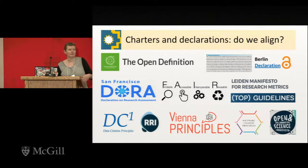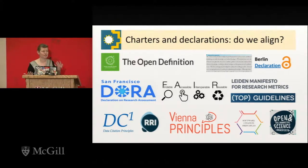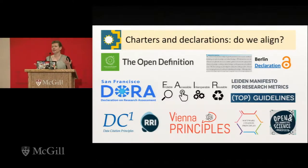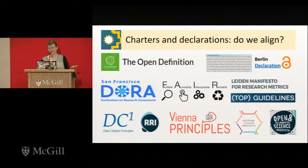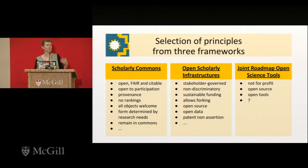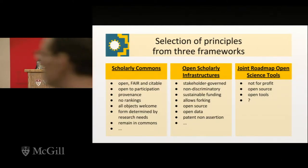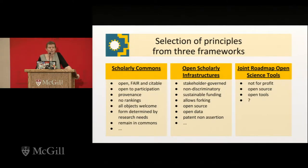A lot of people have been thinking about different aspects of open scholarly communication. There are a lot of charters and guidelines, and the question is whether they can help us in these choices. What we did was take three of these: the Scholarly Commons Principles — full disclosure, we've been working on that ourselves within FORCE11, with many people in this room — and the Principles of Open Scholarly Infrastructure from Cameron Neylon, Geoff Bilder, Jennifer Lin.